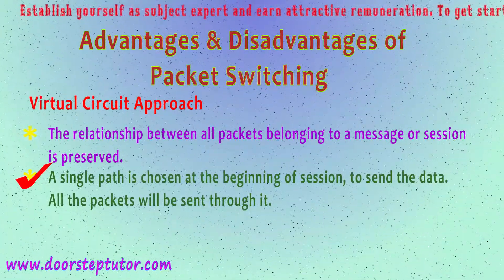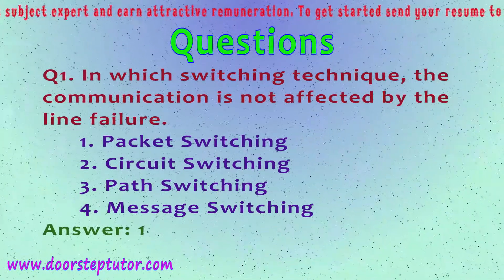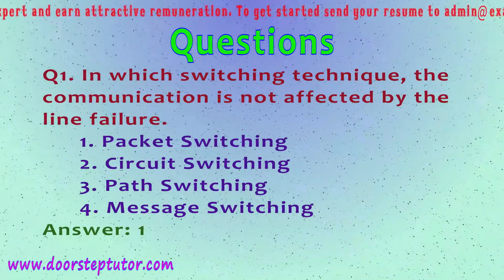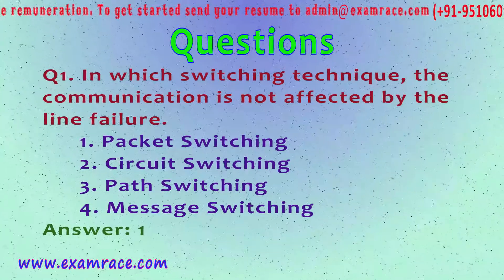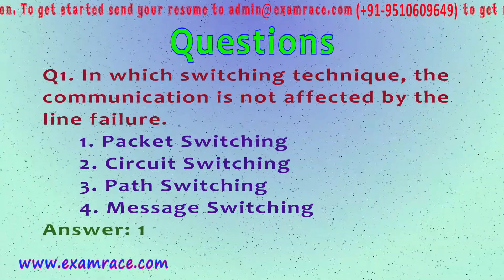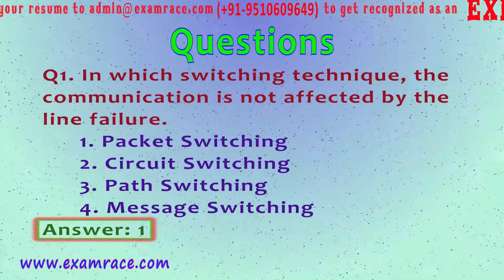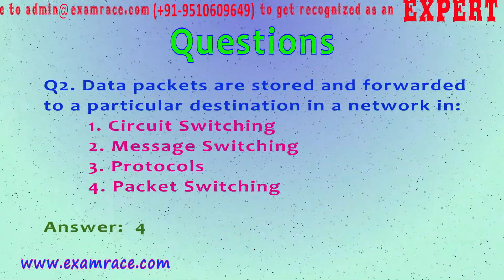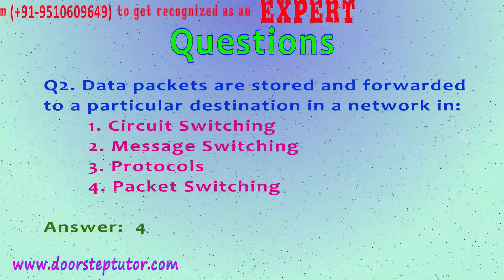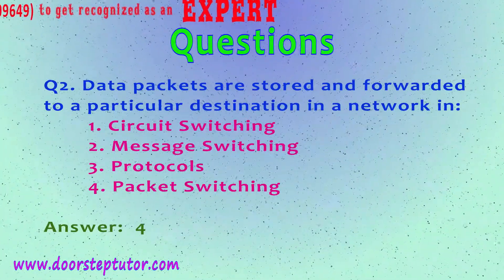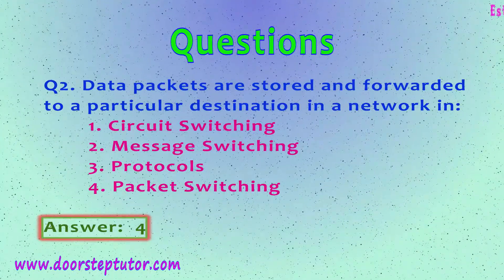Two MCQs on packet switching: Question one — in which switching technique is communication not affected by line failure? Options: packet switching, circuit switching, path switching, message switching. Note that path switching is not a valid switching category. The correct answer is packet switching. Question two — data packets are stored and forwarded to a destination in which network type? Options: circuit switching, message switching, protocols, packet switching. The answer is packet switching.